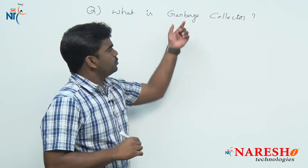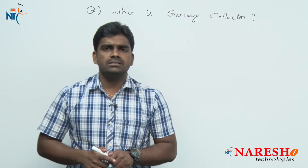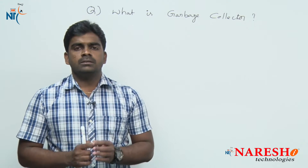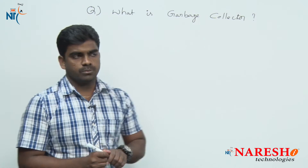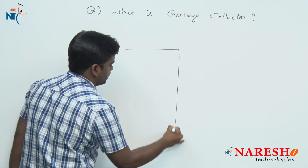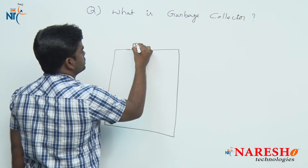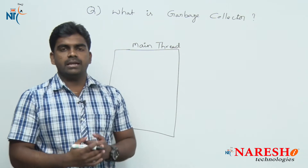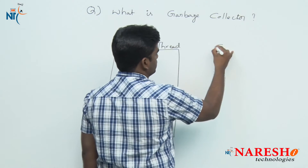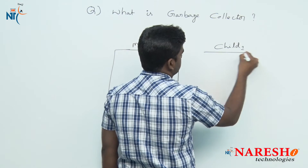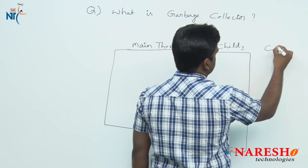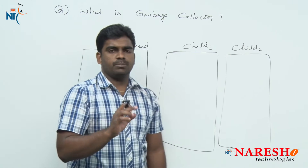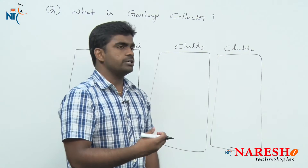First of all, garbage means scrap. In a Java application, execution starts from the main thread. From the main thread you can create any number of threads — child 1, child 2, and so on. There is no strict rule that only one thread will be created.